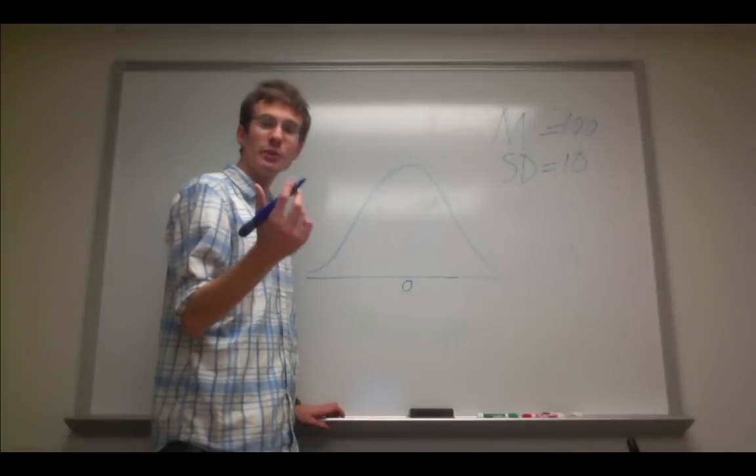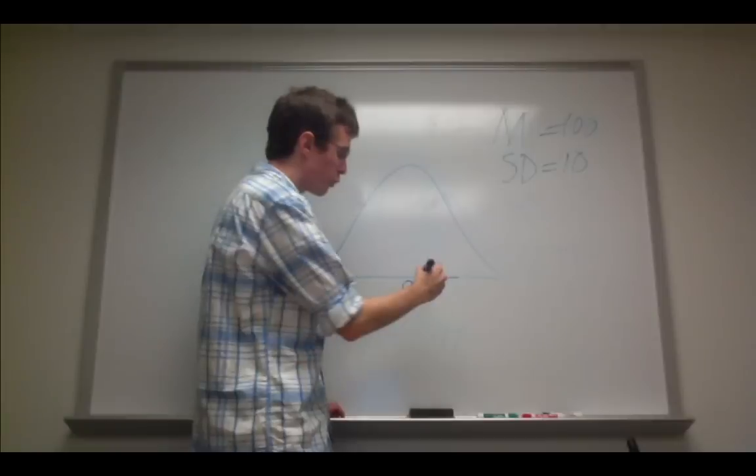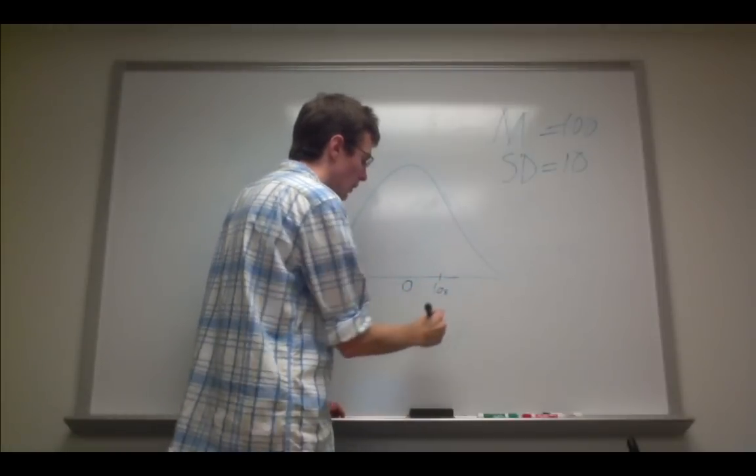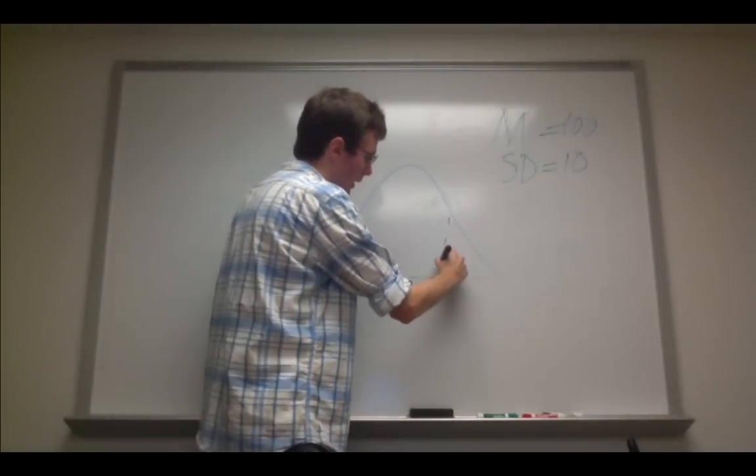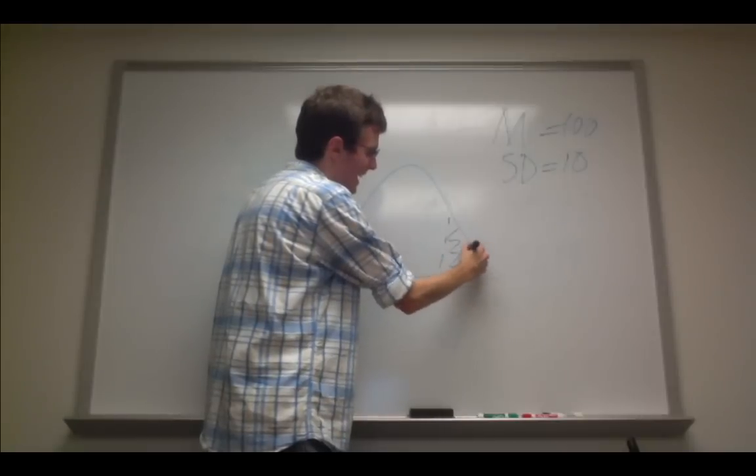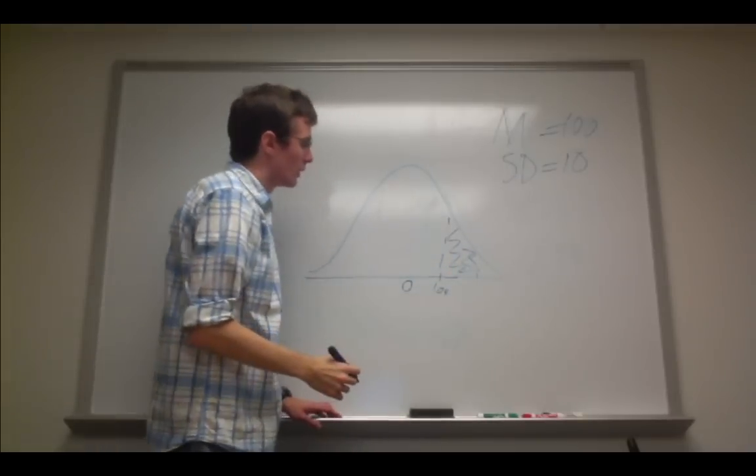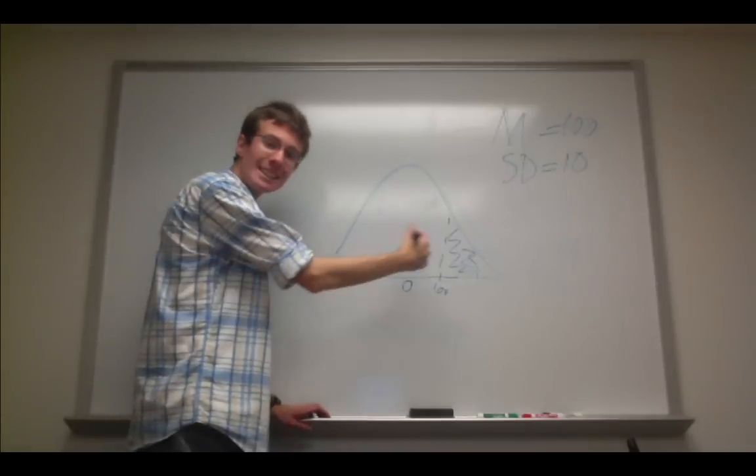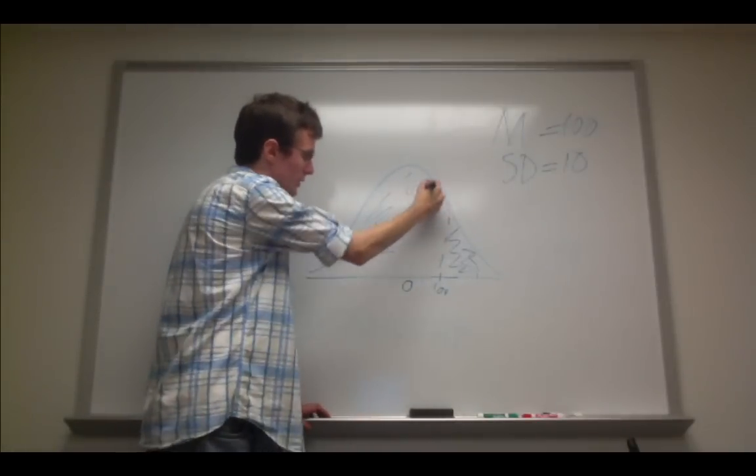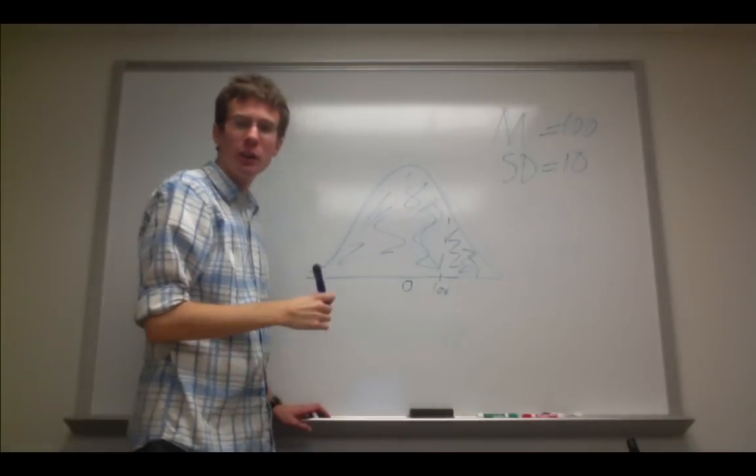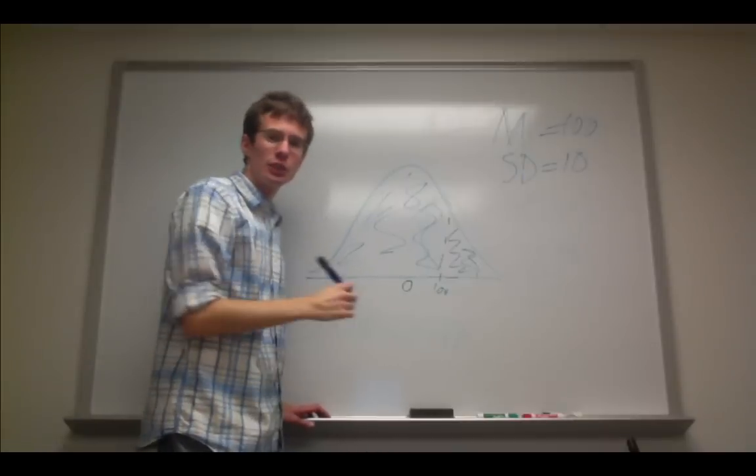This makes sense, because if I have a z-score of 1.04 out here, and I know that there is 15% left in this tail, I can be confident that the rest of this distribution, all the rest of this shaded area right here, is 85% of the distribution.